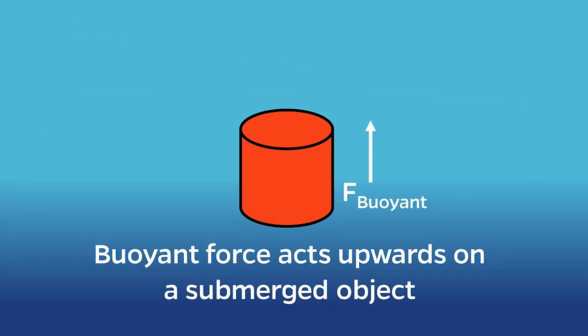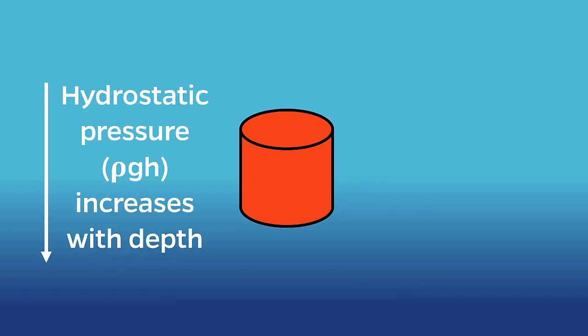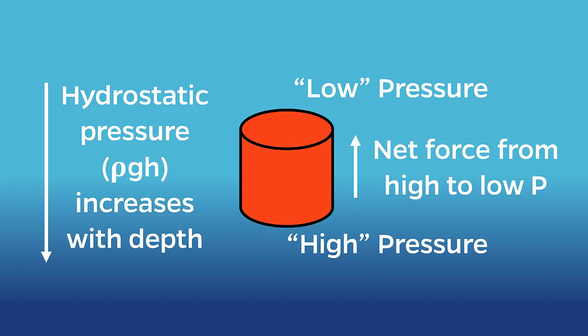Objects that are submerged, even if only partially submerged, have a buoyant force exerted upon them. This buoyant force always acts upwards, meaning opposite of gravity. The reason why has to do with the hydrostatic pressure, which we explained in the last episode. Since the pressure increases with depth into the fluid, the bottom of a submerged object will be in an area of higher pressure when compared to the top of the object.